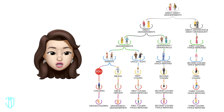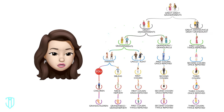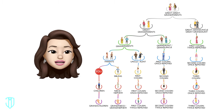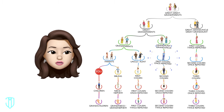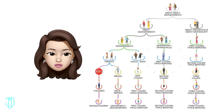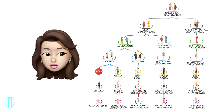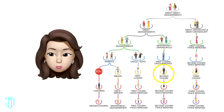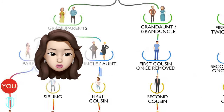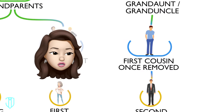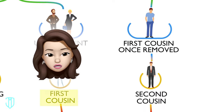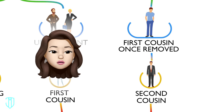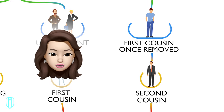Here's the cousin chart. Your grandfather's brother is your granduncle. His son is your first cousin once removed, and his son is your second cousin. What does once removed mean, and what's the difference between first cousin and second cousin? Who even created this system anyway?